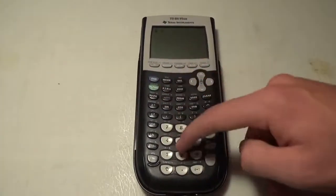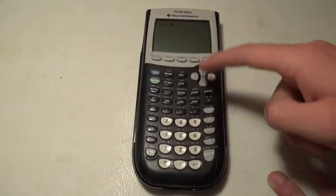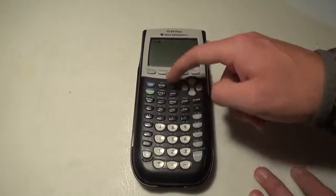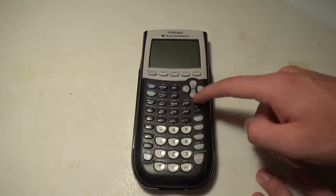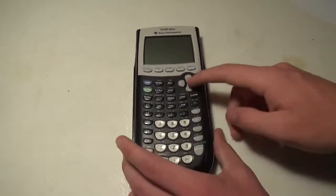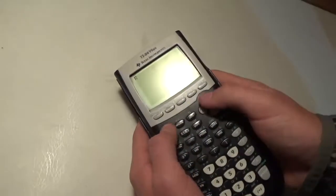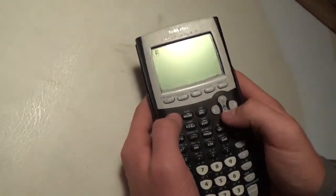All your lists are for easy access right here on the number keys by hitting second. The letters you hit alpha and then whatever letter you want. You can adjust brightness by hitting second and then the number pads.